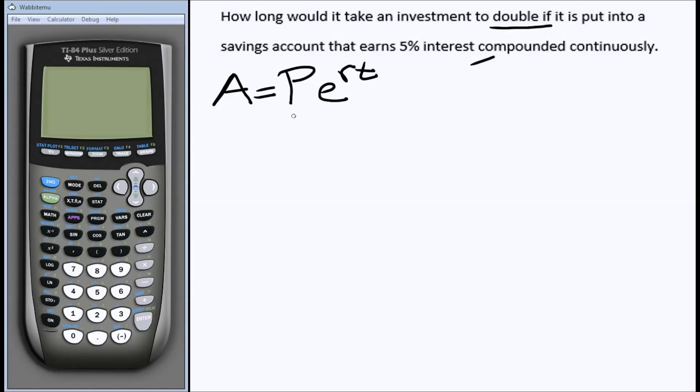If I double, that means that whatever my original balance was, I'm going to double that to find my final balance at the end. Well, the final balance at the end is A. So if I go back to my formula and I replace A with double whatever my original amount is, let's see what happens. 2P is equal to P times e to the, well, we know what the interest is as a decimal. That's .05t.